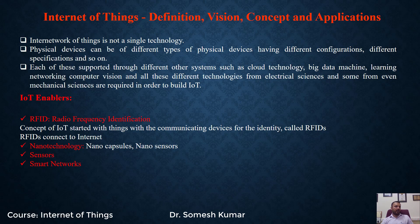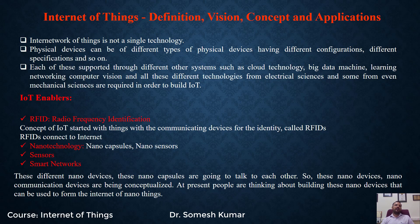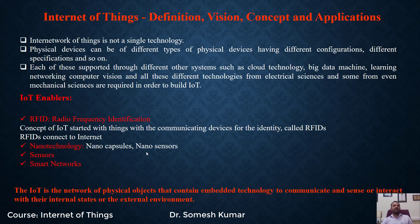The next enabler is the smart network. For a better IoT system, we need fast Internet — a smart internet system is needed for IoT. These different nano devices and nano capsules communicate with each other. Another basic definition of IoT is: IoT is the network of physical objects that contain embedded technology to communicate, sense, or interact with their internal states or the external environment.